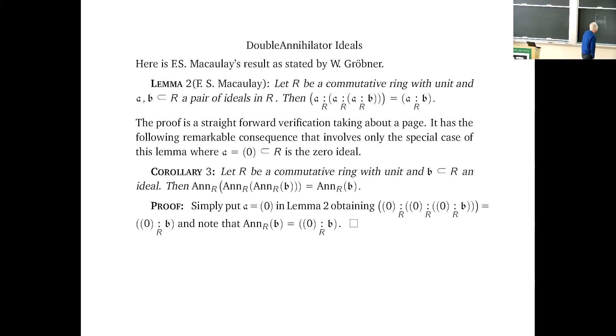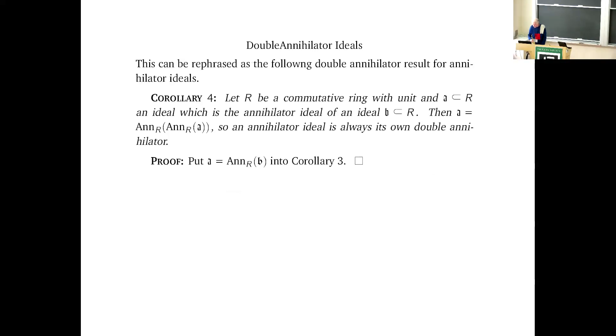If you're not a fan of the double dot construction, I understand that. I certainly wasn't as a student, but it's a very powerful tool. And this has as a corollary that if R is a commutative ring with unit and B is any old ideal, then the triple annihilator ideal of B is B itself.